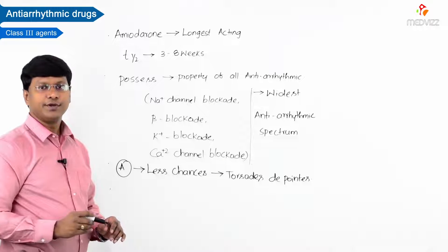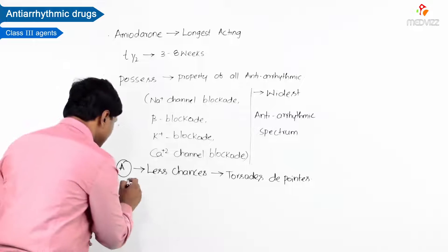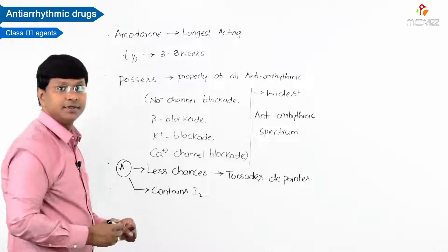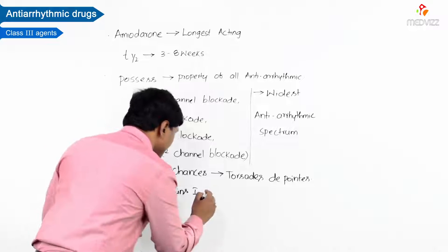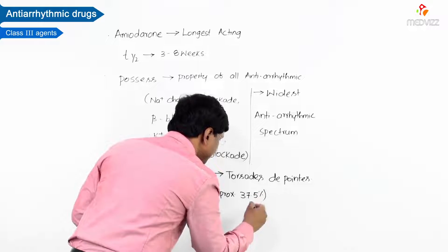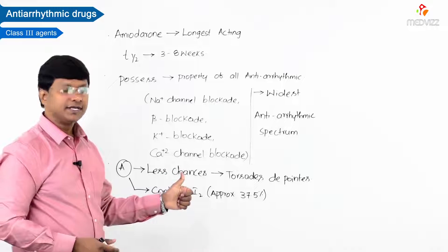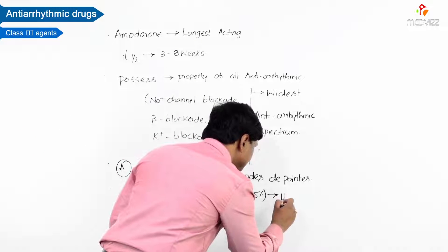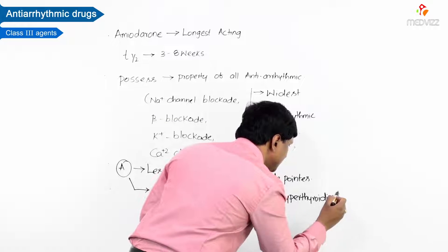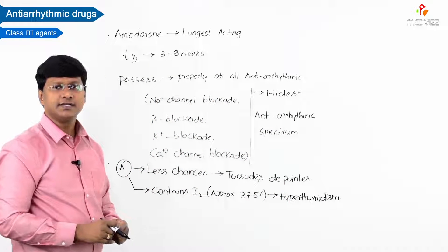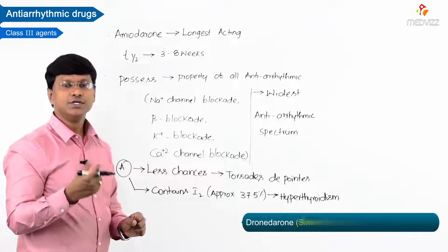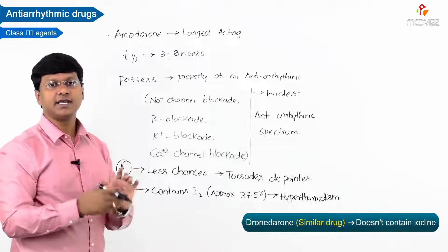Amiodarone contains iodine — approximately 37.5 percent. That is the reason why amiodarone can result in hyperthyroidism. There is a similar drug to amiodarone called dronedarone, which does not contain iodine.